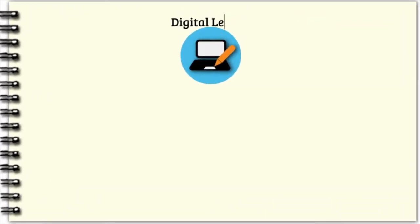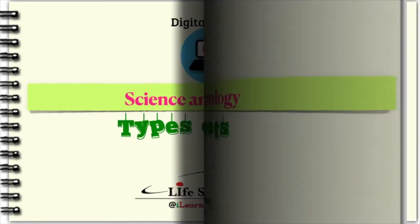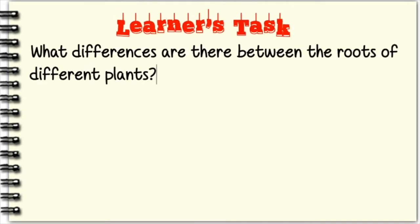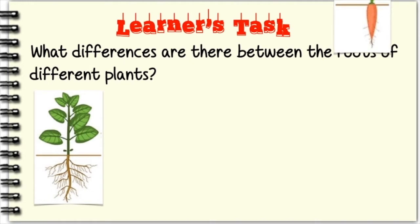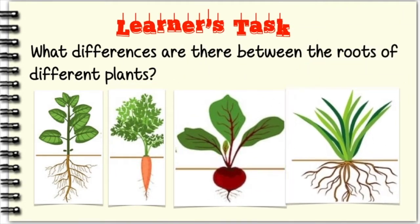This is the Science Bulletin, a digital lesson on living things. It is a production of Life Skills Planet brought to you by a school television network. In this digital lesson, we will cover plants. We will identify different types of roots. We will answer this question: What are the differences between roots of different plants?